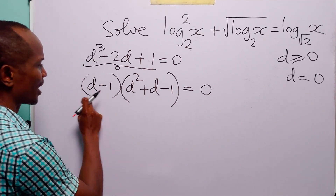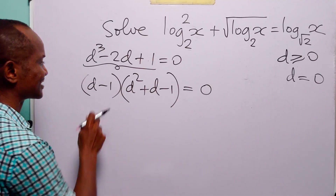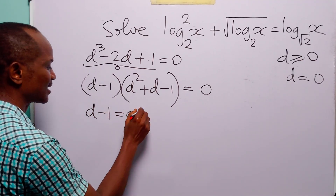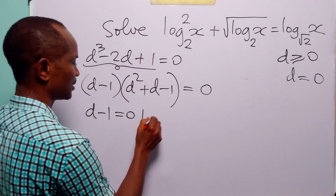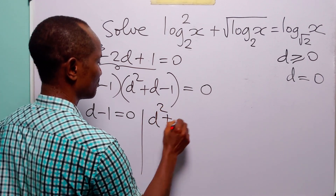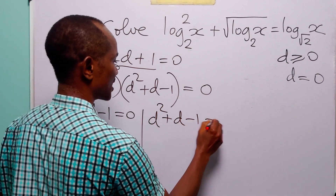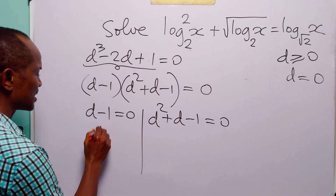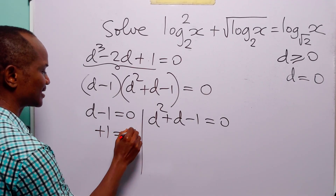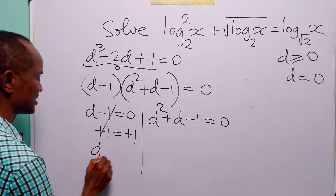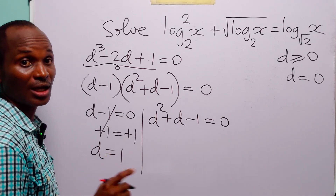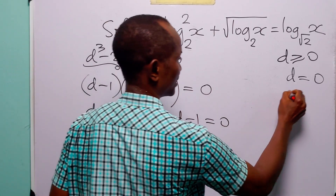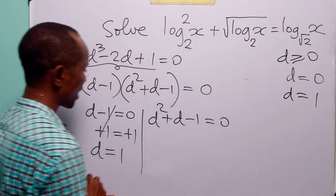We have now factorized this cubic expression, giving either d minus 1 equals 0 or d squared plus d minus 1 equals 0. From d minus 1 equals 0, we get d equals 1, which is another value of d.